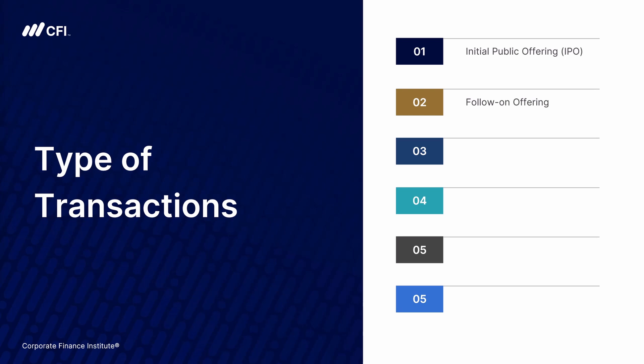While a follow-on offering would be open and available to any public shareholders, the company may choose to do a private placement, where it would be issuing shares only to a select group of shareholders. The first three types of transactions involve the company seeking forms of financing. But we could also look at mergers and acquisitions, or M&A, where the company would look for other companies to possibly invest in.